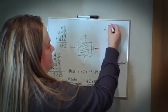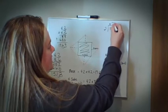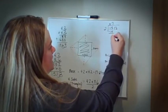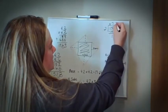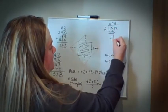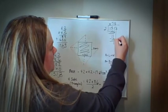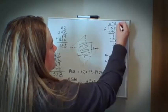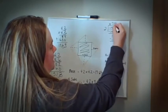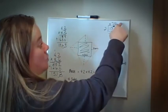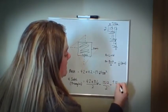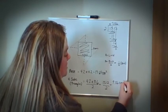2 goes into 1 zero times. 2 goes into 15 seven times. 15 minus 14 is 1. 2 goes into 11 five times. 2 goes into 12 six times. My decimal goes straight up because I have no decimal on the outside. So one triangle has an area of 7.56 centimeters squared.